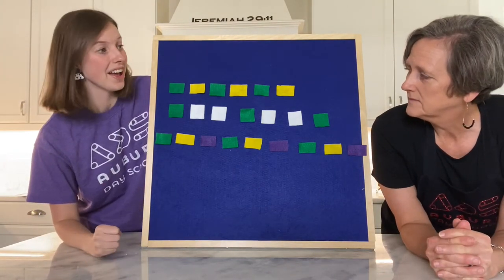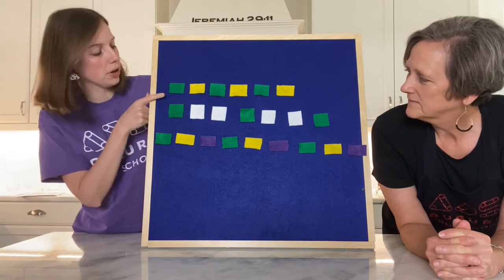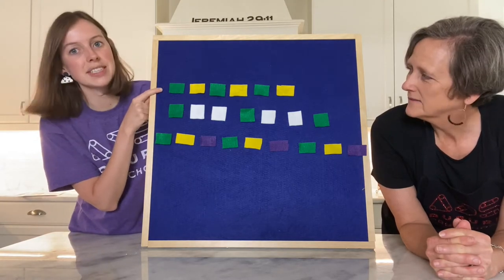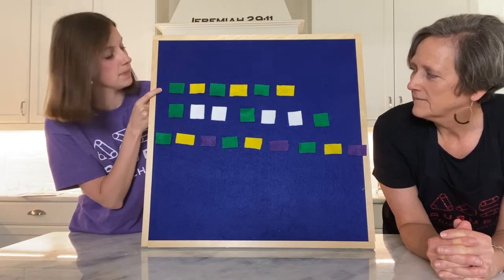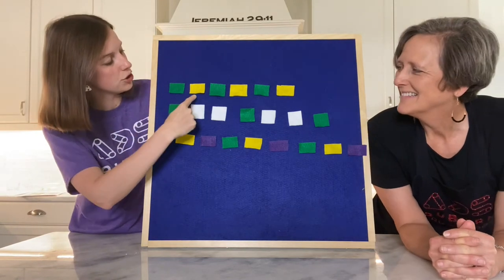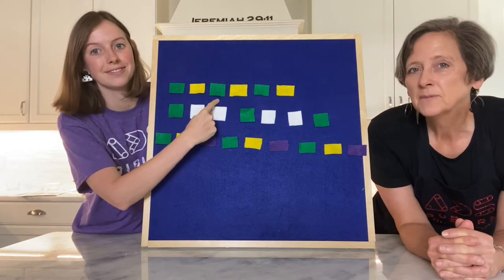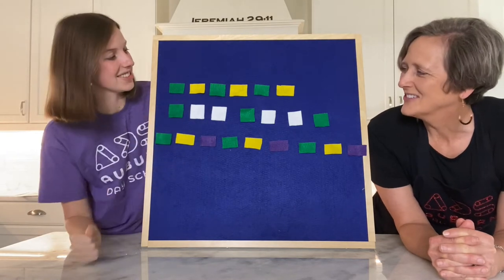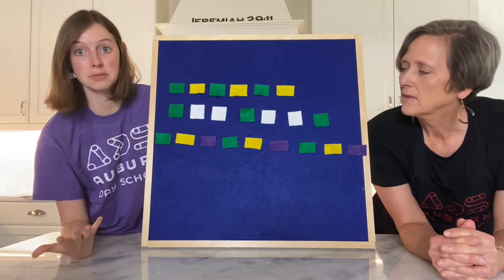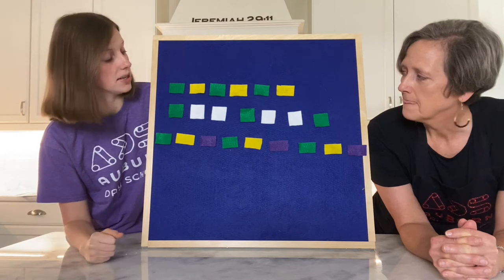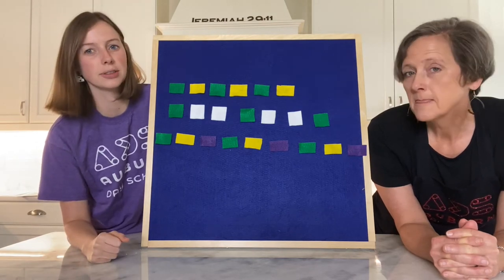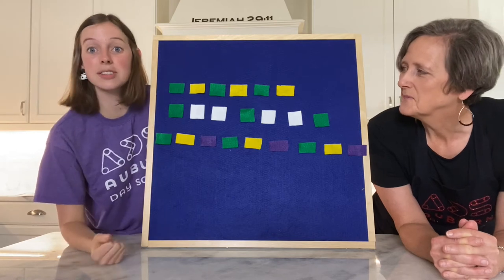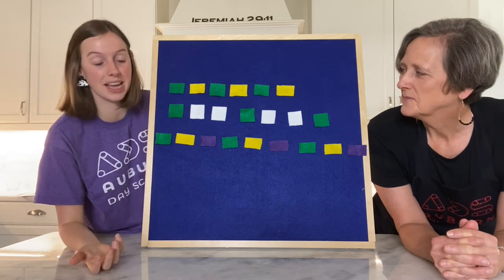So let's try naming these patterns on the board. We're going to look at the top one first. These are all the same shape — rectangles — and they're all the same size. So what's different about these rectangles? They're a different color. So let's use the color to help us name the pattern.